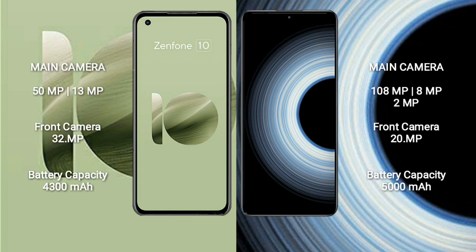Asus Zenfone 10 features a dual rear camera setup: 50MP plus 13MP, and a 32MP front camera. Redmi K50 Ultra features a triple rear camera setup: 108MP plus 8MP plus 2MP, and a 20MP front camera.